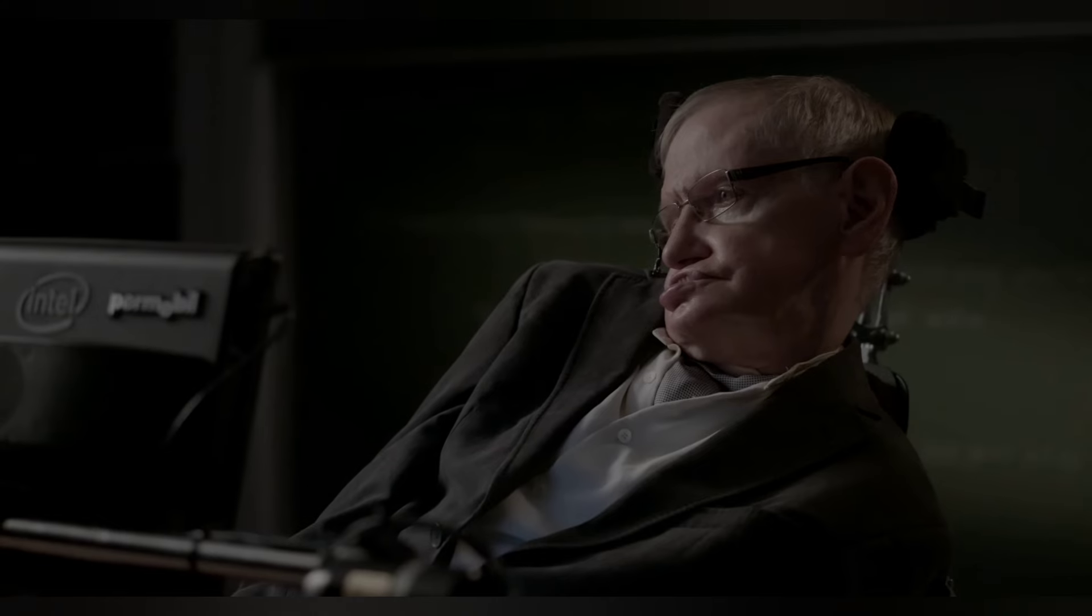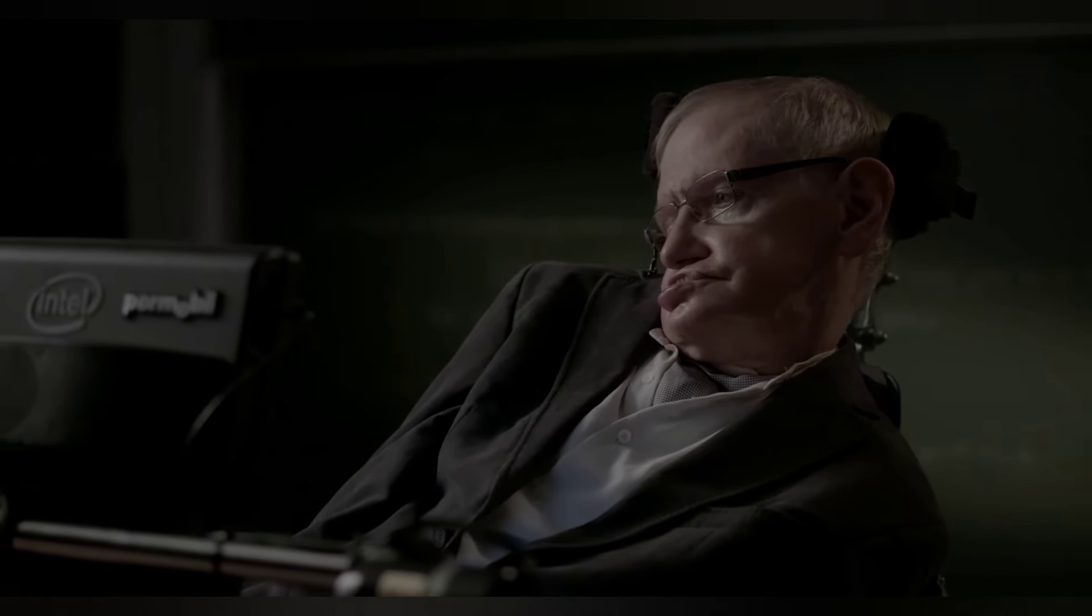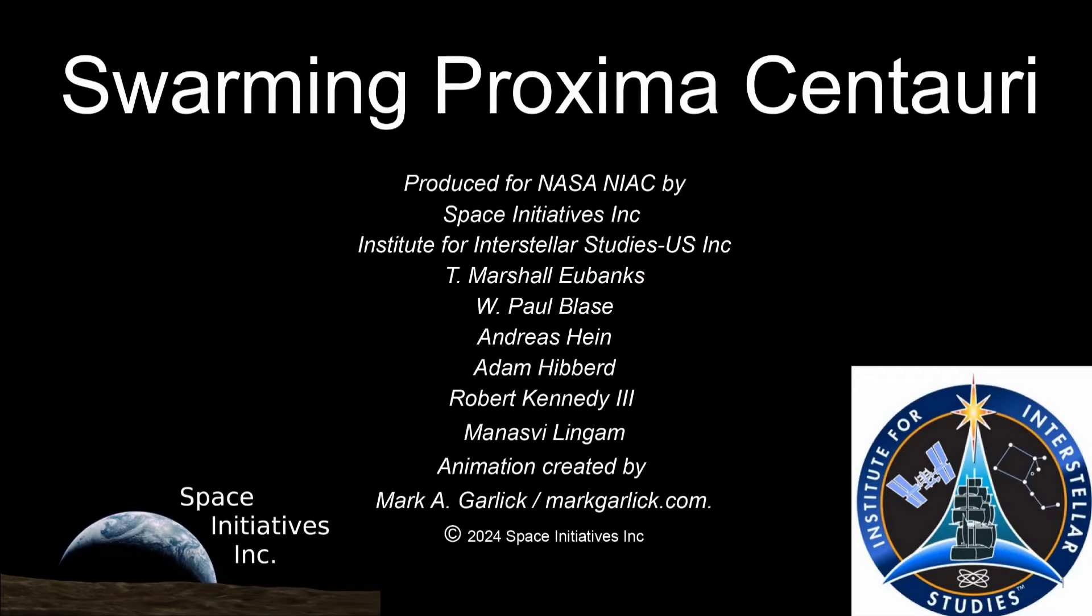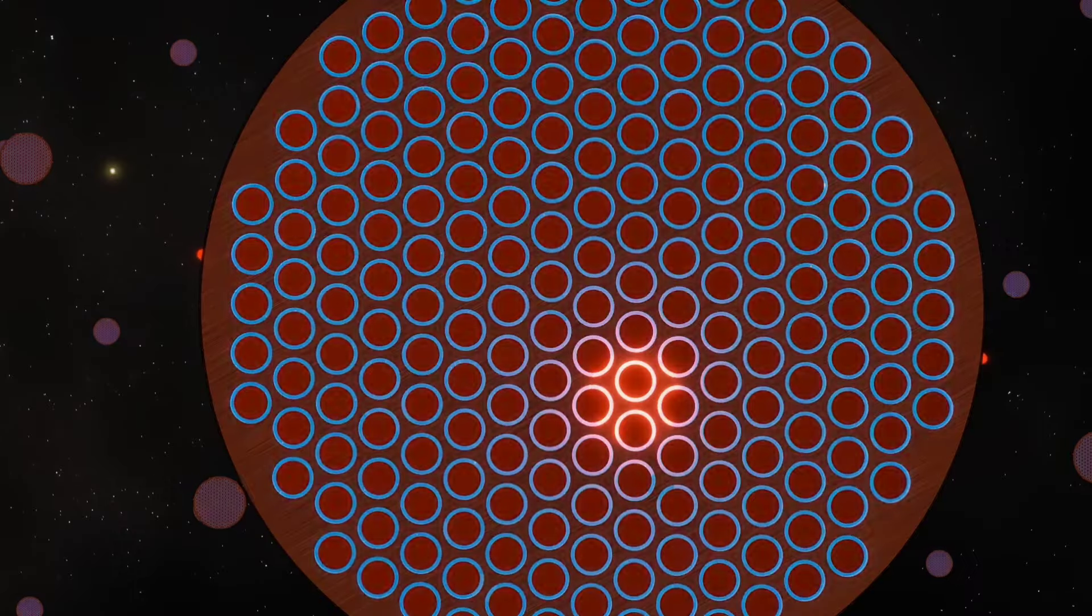A starship, a fully functional space probe reduced to a few centimeters in size and grams in mass, will be attached to a light sail. Made from meta-materials, the light sail weighs no more than a few grams. The starship and light sail, together known as a nanocraft, will be placed in orbit.